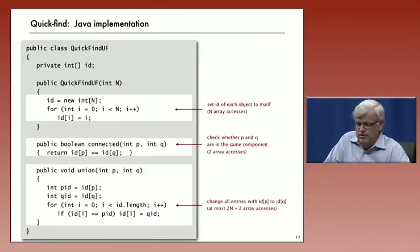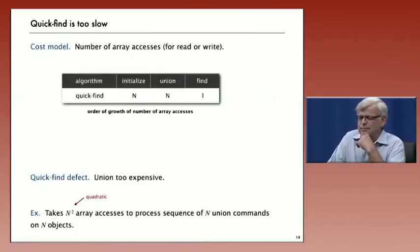The more complicated operation to implement is union. There we find first the ID corresponding with the first argument, then the ID corresponding to the second argument. Then we go through the whole array looking for entries whose IDs are equal to the ID of the first argument and set those to the ID of the second argument. That's a pretty straightforward implementation. The mistake we might make is to put ID of P here rather than first picking out that value—that's an insidious bug.